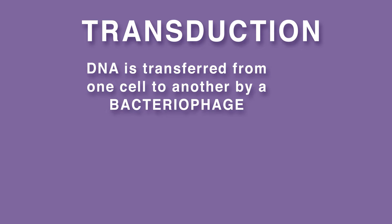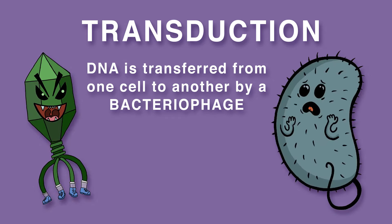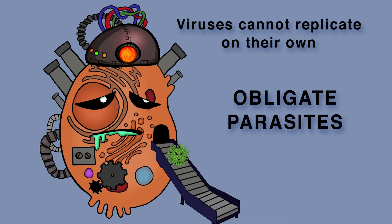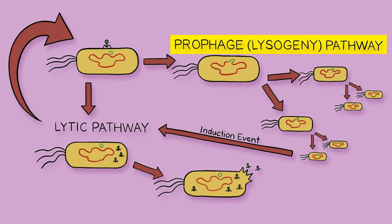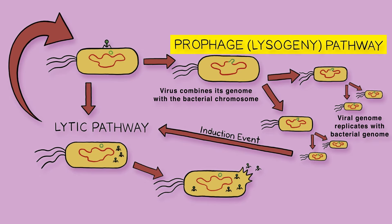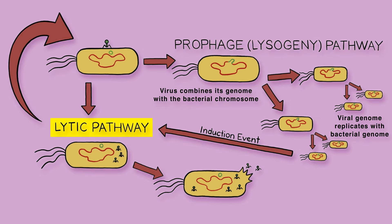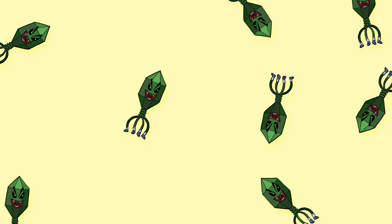Transduction occurs when DNA is transferred from one cell to another by a bacteriophage, a type of virus that infects bacteria. Viruses cannot replicate on their own — they are obligate parasites that rely on host machinery. Many bacteriophages can switch between a state of lysogeny and a lytic cycle. When the bacteriophage is in a state of lysogeny, the virus combines its genome with the bacterial chromosome. The viral genome persists there for many generations as the bacteria replicates. When induction occurs, the virus switches to the lytic cycle. The cell becomes a virus-producing factory until it gets so full of virus that it lyses, releasing virus particles into its surroundings.